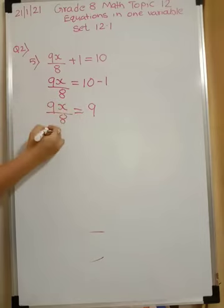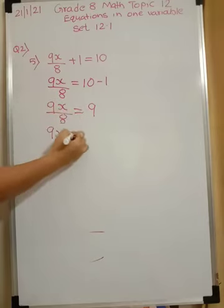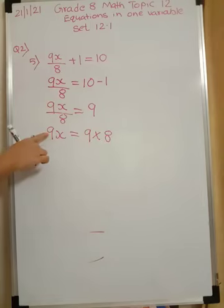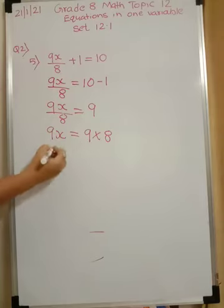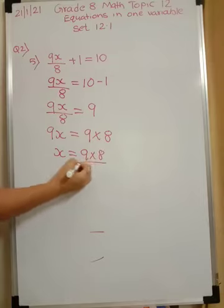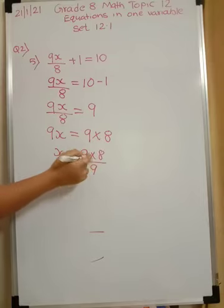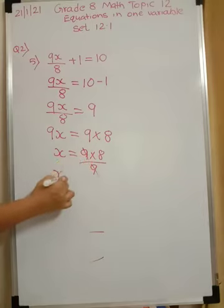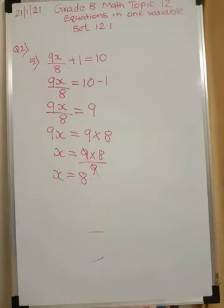Now I want only the value of x, so all other values I am going to shift. So first I am shifting 8. 8 is in division, here it will go in multiplication. So it is 9 into 8. Now in between 9 and x there is multiplication. If I shift it will go in division. So x will be equal to 9 into 8 upon 9. So 9, 9 gets cut and you get value of x is 8. It's as simple as that. Very easy.